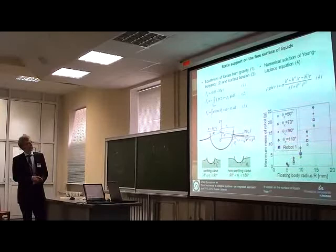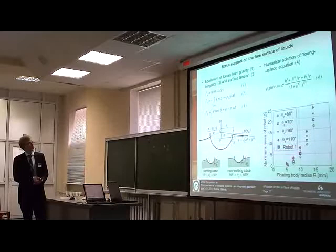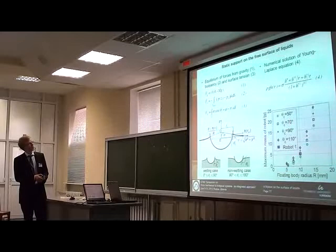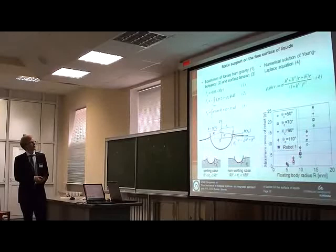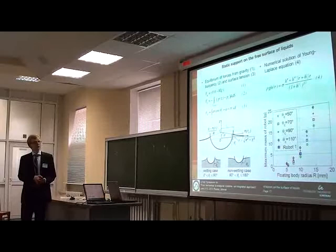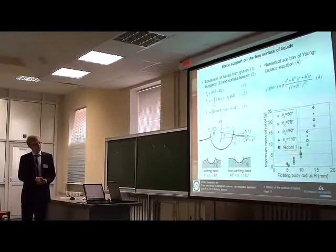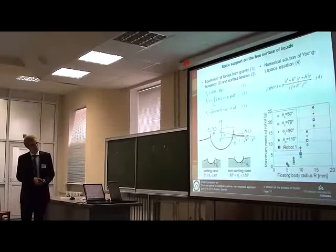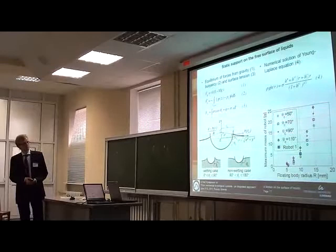To calculate the mass of the robot, we consider the ideal half-sphere, a rigid one, which is partly submerged, and we made the equilibrium of forces, of gravitational force, force from buoyancy, and the force from surface tension, which has, if we're making a full integration, only a vertical component. So, in this diagram, one can see the results of our calculations. For example, for different contact angles, we can see how much weight such a robot can carry corresponding to the radius of this floating body.